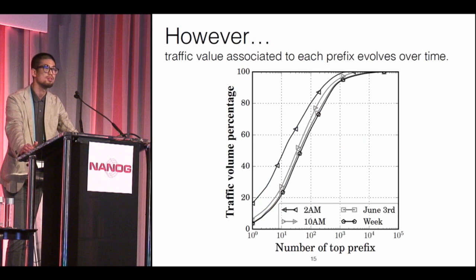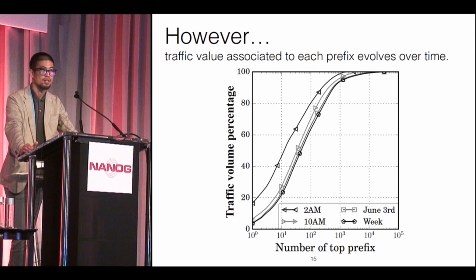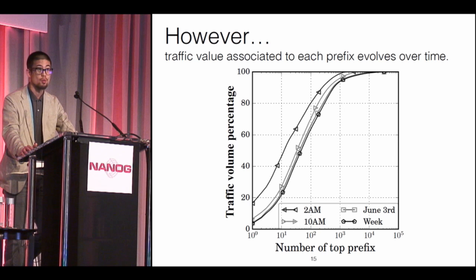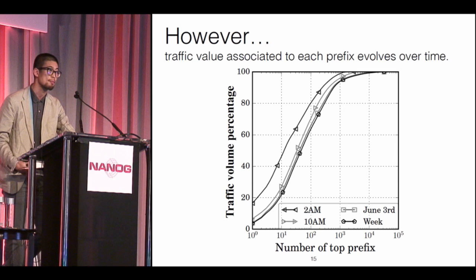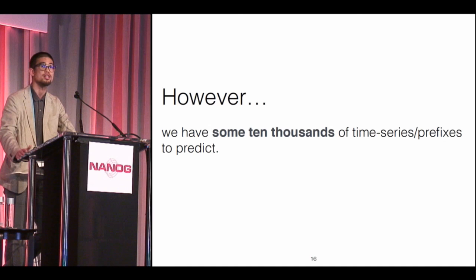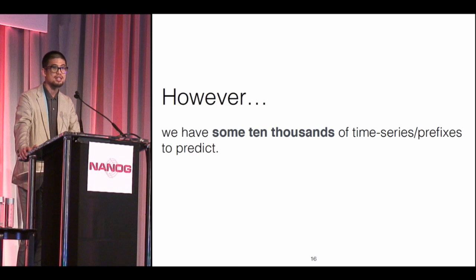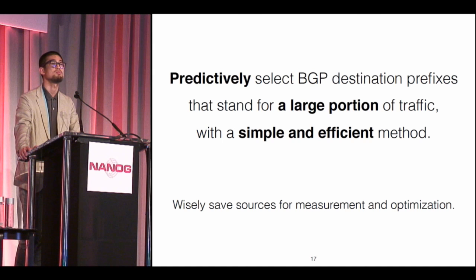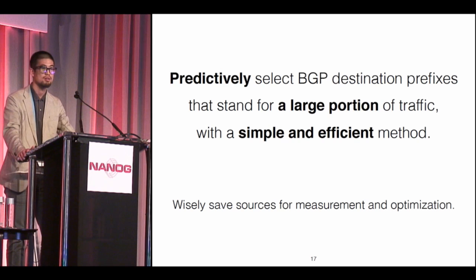But we can't simply select a static set of prefixes and assume they will always represent a dominant amount of volume, because traffic volume changes. So we have to predict which prefixes are going to be important for future moments, and repeat this prediction from time to time. Talking about prediction — while we do network dimensioning involving many algorithms, the point is that those complex mathematical models become very complicated when we have thousands of active prefixes to predict. Our quest is to predictively select BGP destination prefixes that stand for a large portion of traffic, but with a very simple method that scales.